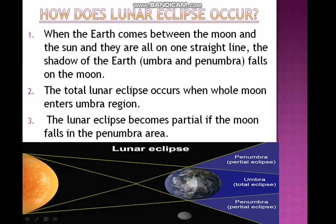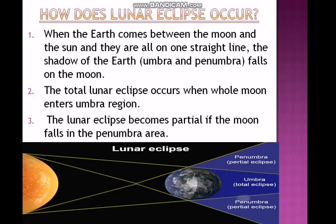How does a Lunar Eclipse occur? When the Earth comes between the Moon and the Sun, and they are all on one straight line, the shadow of the Earth falls on the Moon, so the Moon cannot reflect the sunlight and it disappears completely. The total Lunar Eclipse occurs when the whole Moon enters the Umbra region, and the partial Lunar Eclipse occurs when the Moon is in the mid-Umbra region.